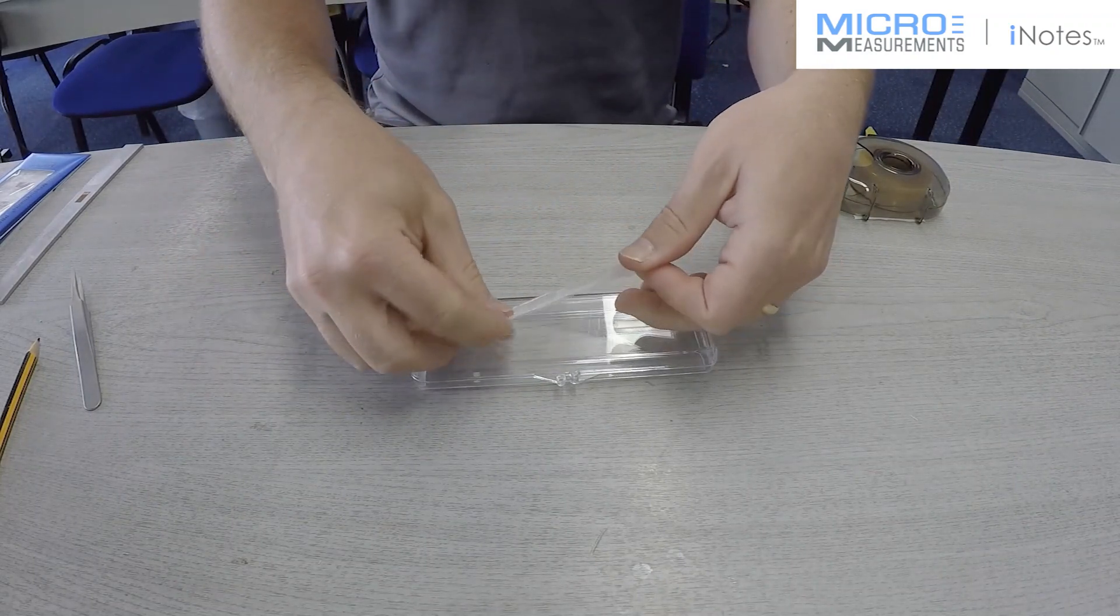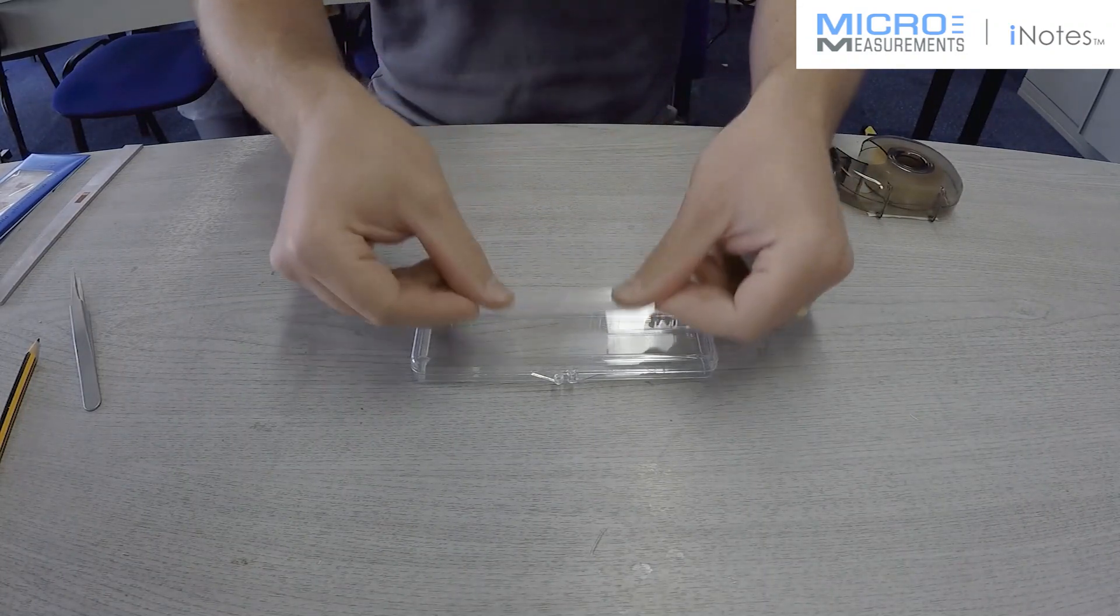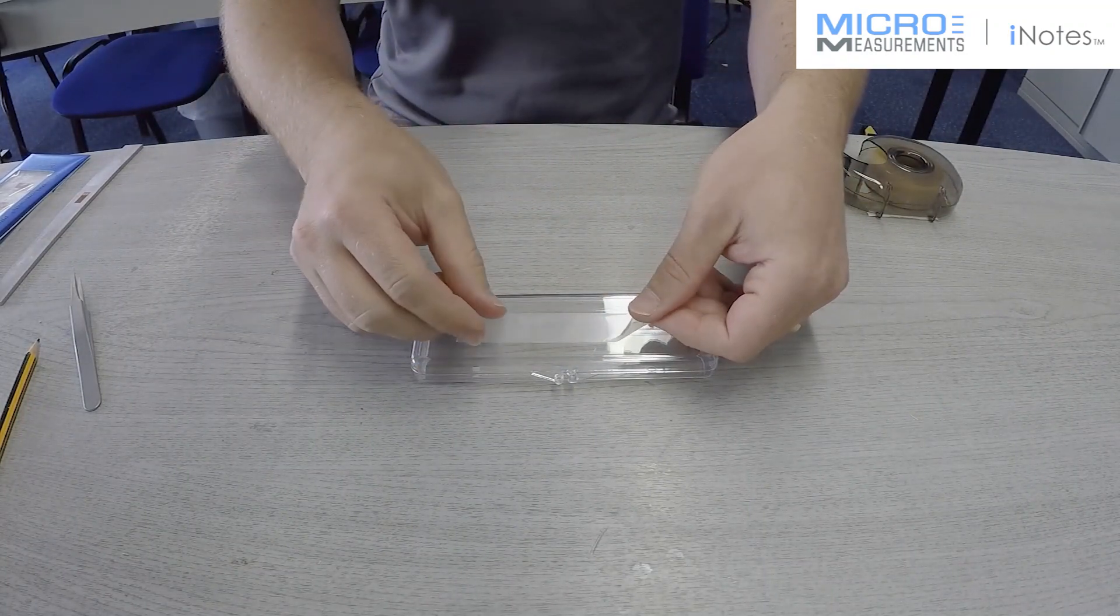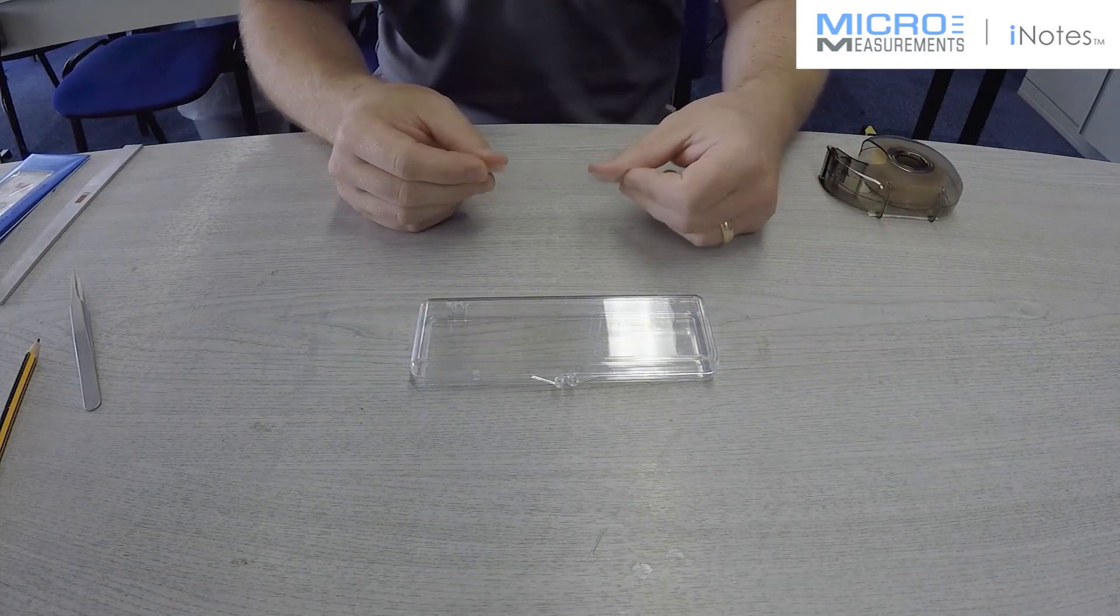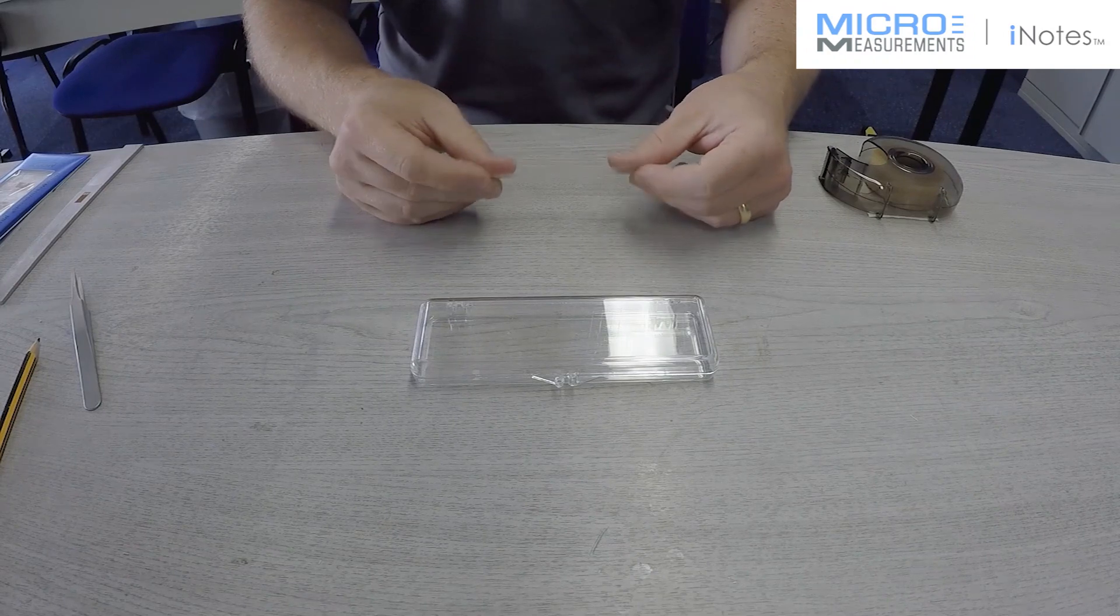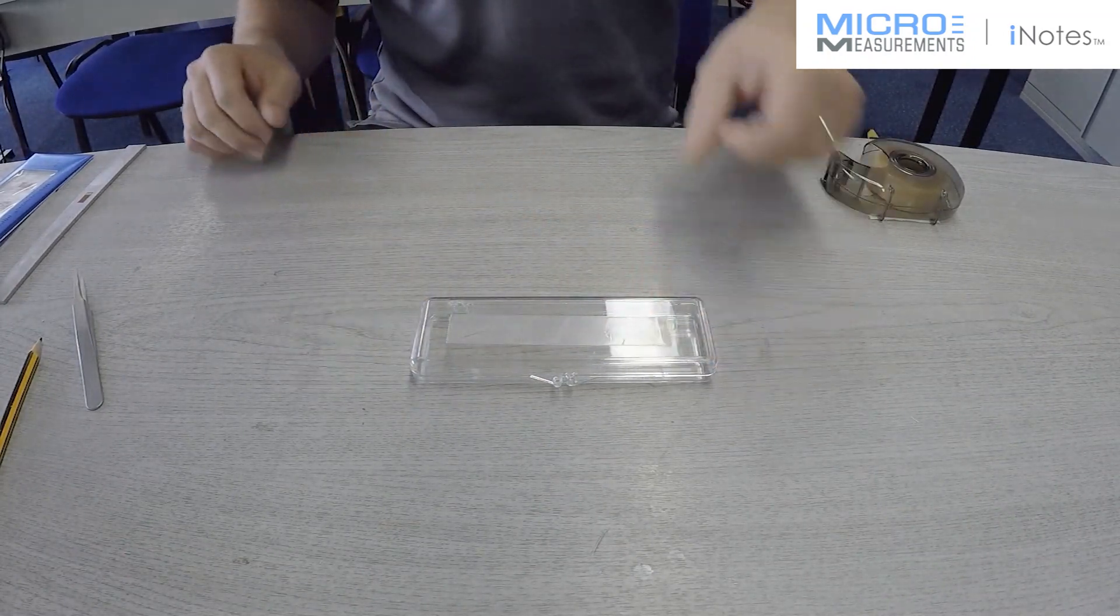And to be honest, within reason you can do that as many times as necessary. It's not leaving mastic behind, it's not leaving any marks on the surface, it's not contaminating that surface. So we can have several goes if necessary to get our gauge aligned. So it's very easy to handle. It helps the user be successful with their strain gauge installation.